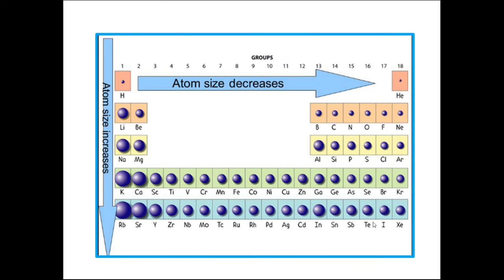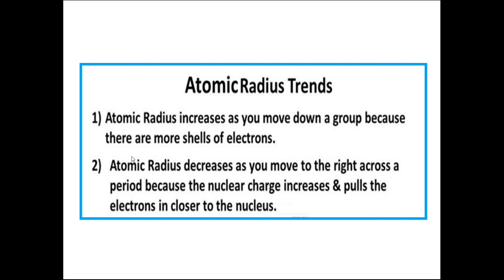In summary, when studying the periodic table and considering atomic size: atomic size decreases when we move from left to right in a period, and atomic size increases when we move from top to bottom in a group. Atomic radius increases as you move down a group because there are more shells of electrons. Atomic radius decreases as you move to the right across a period because the nuclear charge increases and pulls the electrons closer to the nucleus.